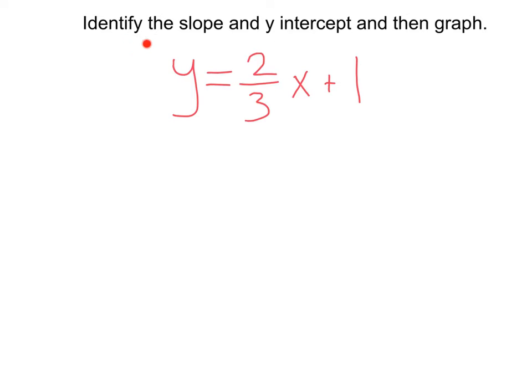Alright, here we want to identify the slope and the Y intercept, then graph the line. We've got the equation, Y equals two-thirds X plus one. We're in luck. This is already in Y equals MX plus B form. Now, our M is going to be equal to two-thirds, and our B, our Y intercept, is going to be equal to one.